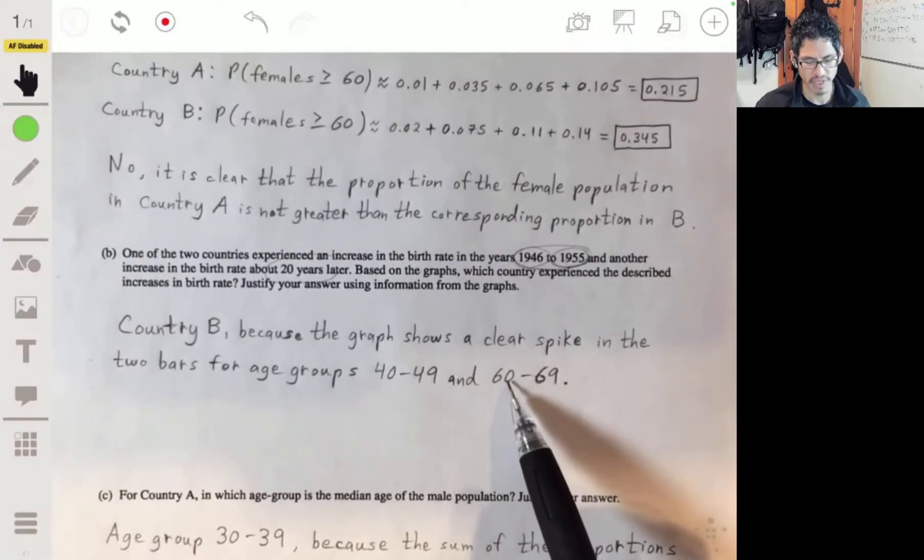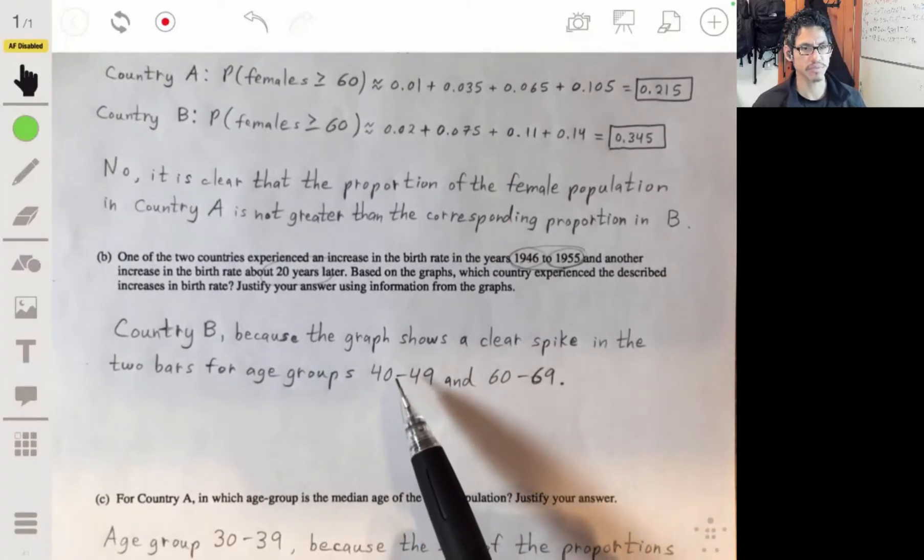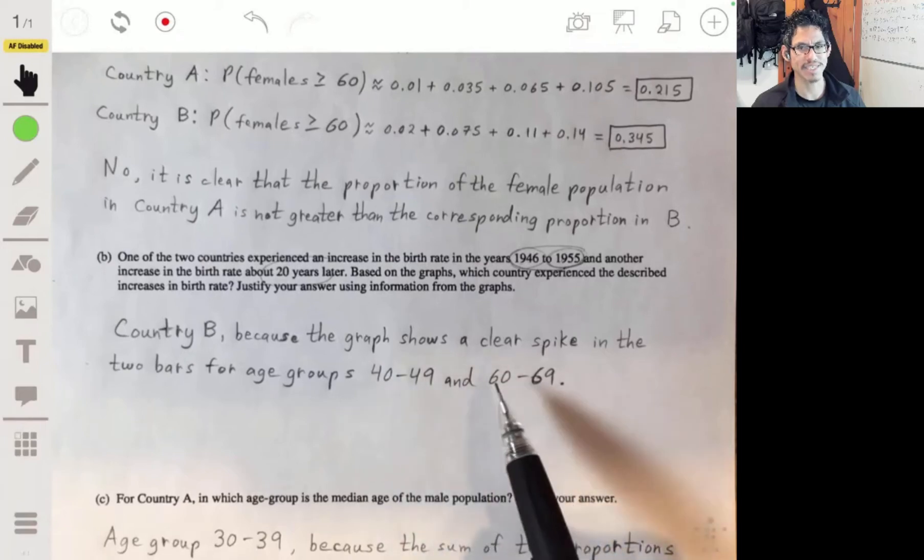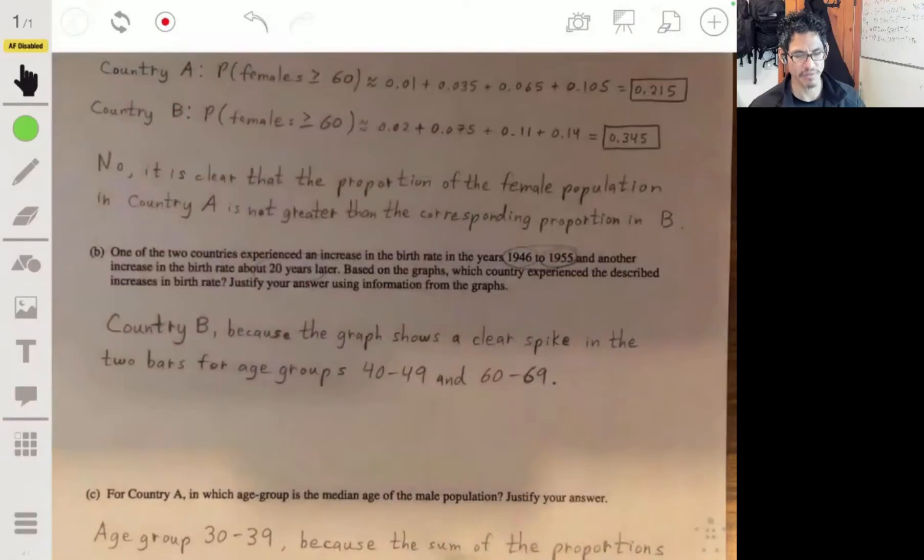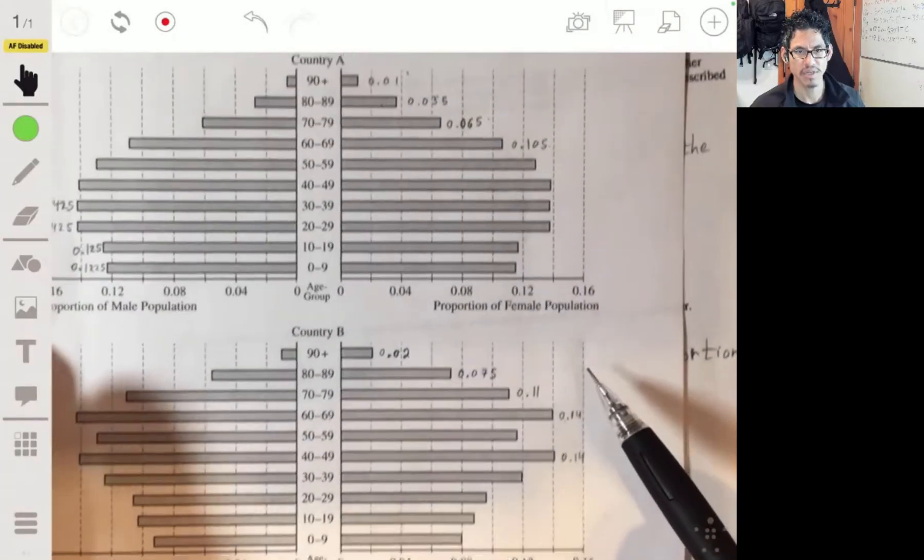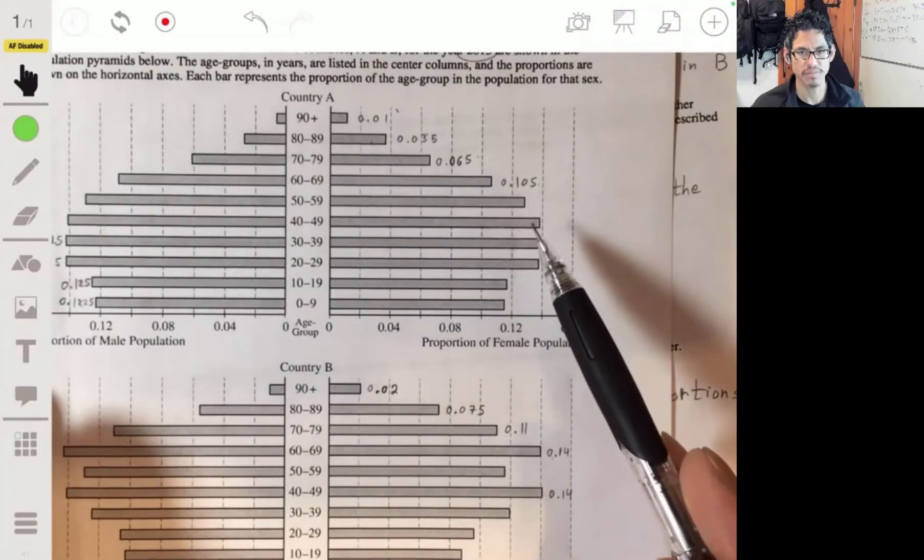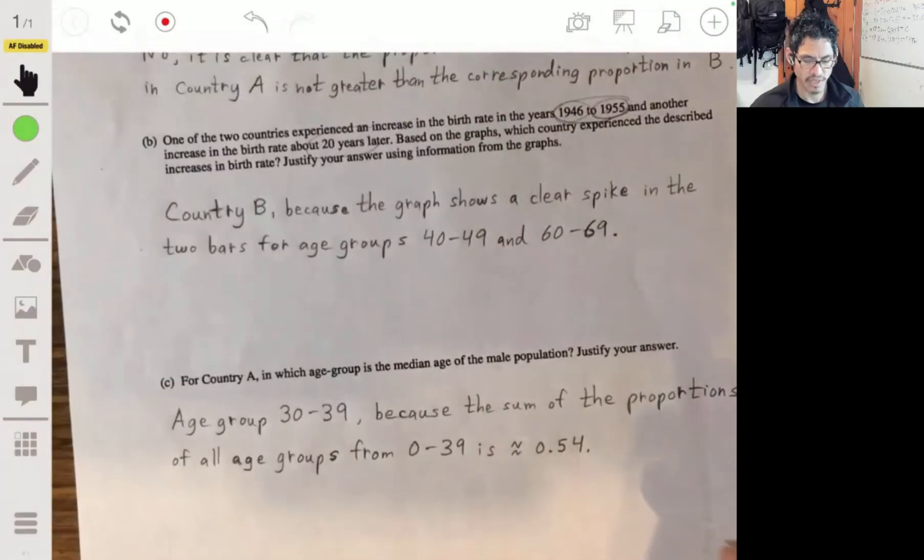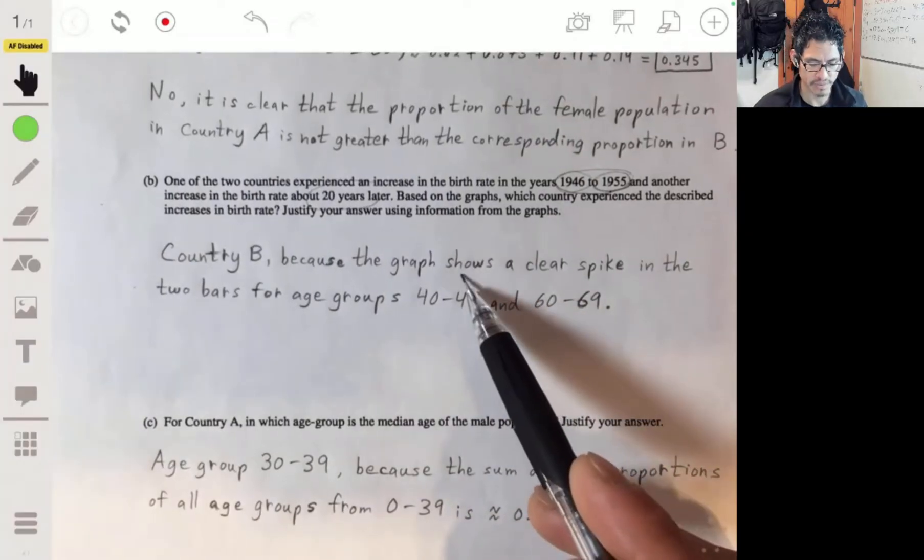So you're looking for the two bars for the age groups 40 to 49 and 60 to 69. And in country B, there's a clear spike in the graph. In both those graphs, you can see. In country A, you don't see spikes in both ways. So the answer is you can see a clear spike and you want to address the correct age groups.